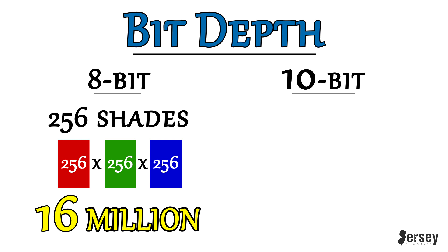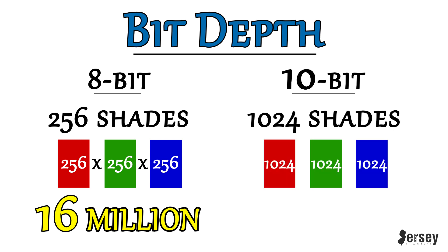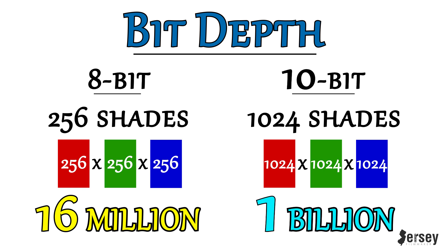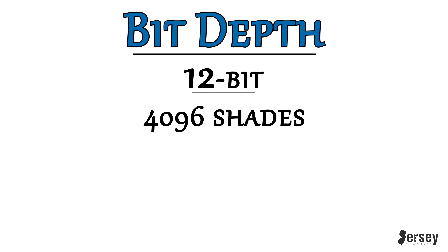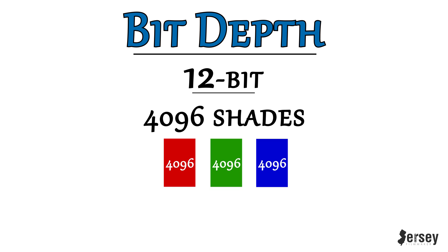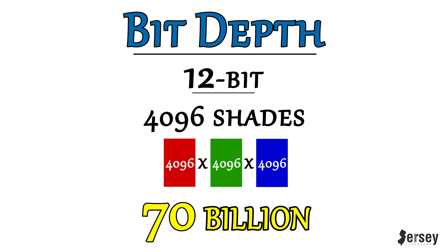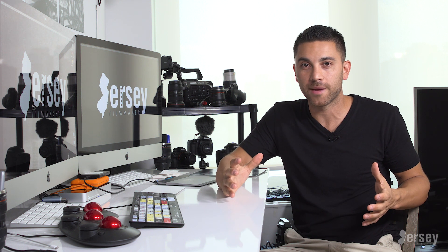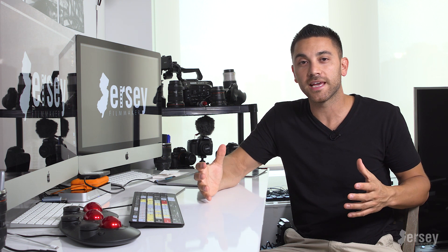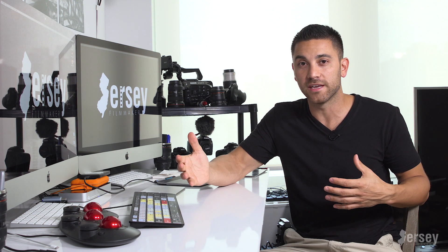So let's look at 10-bit. 10-bit contains 1,024 shades per channel. Multiplying these together, you will get just over 1 billion colors. 1 billion compared to the 16 million of 8-bit — now you see why 16 million is not a lot of colors. And if we quickly look at 12-bit, there are 4,096 shades in each channel, which equals almost 70 billion shades of color. So as you can see, the higher the bit depth, the more colors your camera can capture, and this usually goes hand in hand with color sampling, which we'll get into right now.